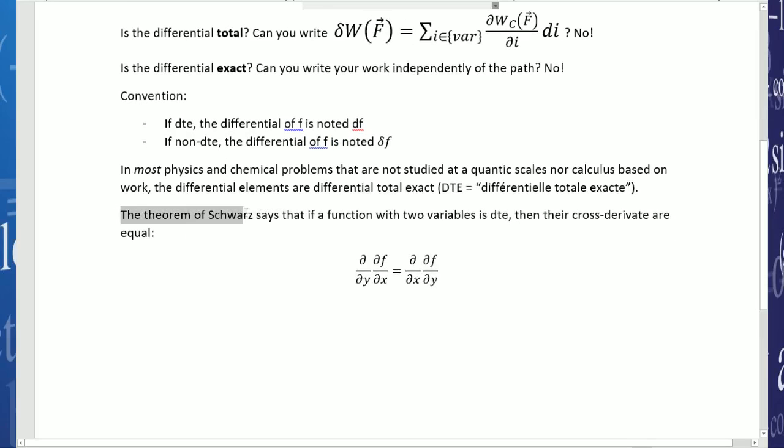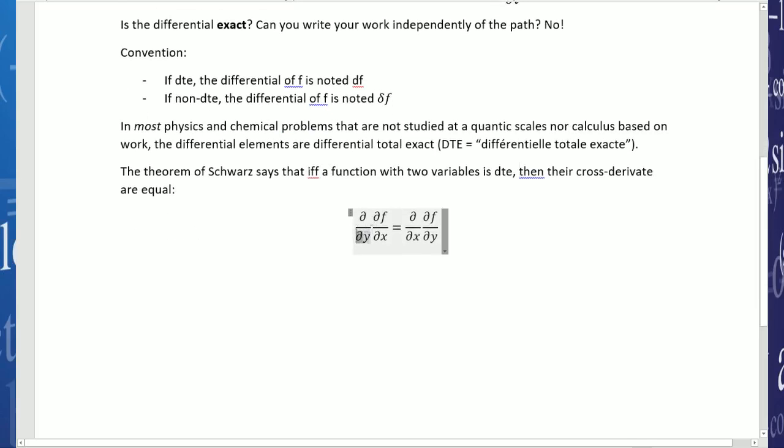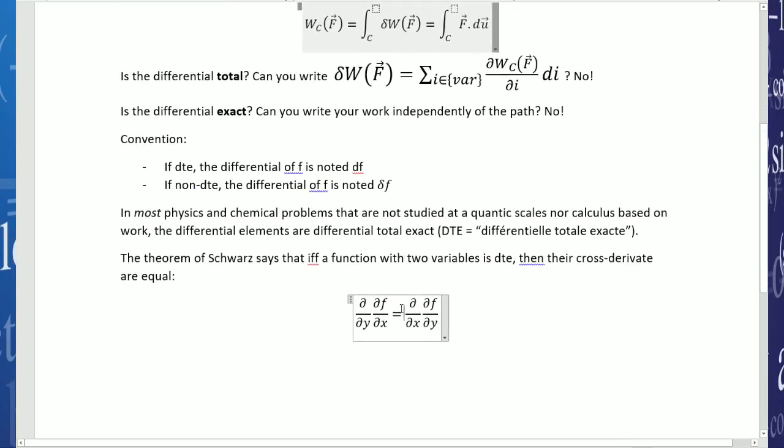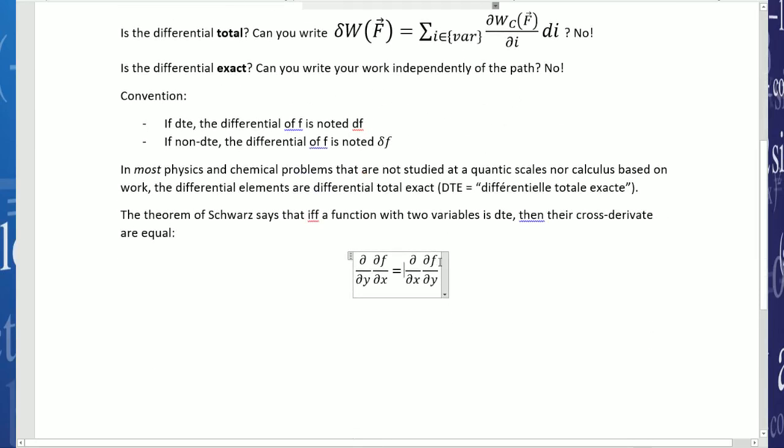The theorem of Schwartz guarantees that if and only if a function with two variables is DTE, then their cross derivatives are equal. So if you derivate the function by x then by y, it's the same as derivating by y then by x. So if you have a function of two variables, you can try derivating by one variable and then the other, and mostly you're going to find that it's a DTE because of Schwartz.